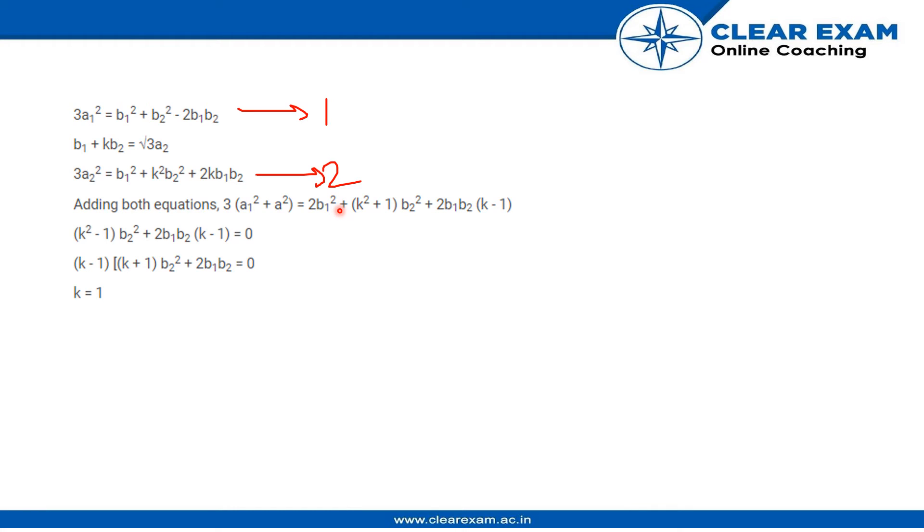Using this relation, we will see that 2b1² is canceled, and 2b2² taken to the right-hand side becomes (k² - 1)b2² + 2b1b2(k - 1) equals zero.